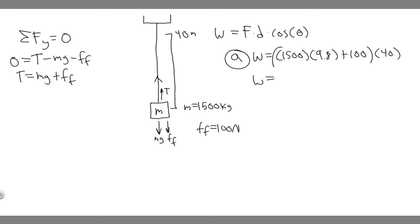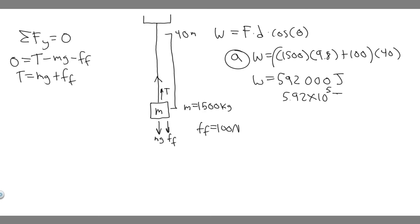When you calculate that, you get 592,000 joules. We measure work in joules, so that's 5.92 times 10 to the 5 joules. This is your answer to part A — the work done by the cable.